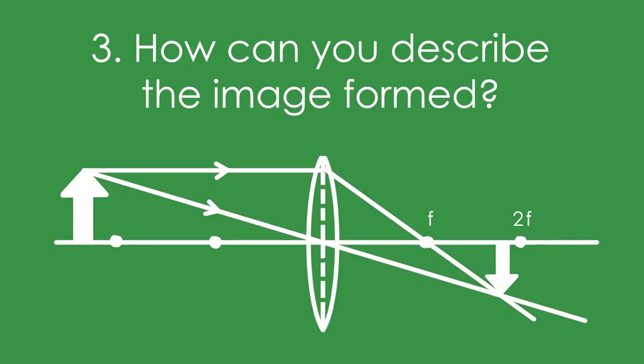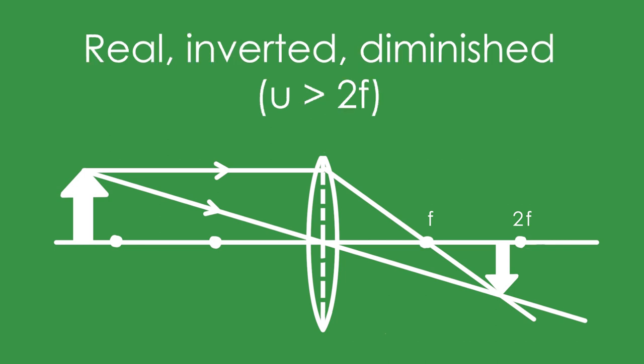How can you describe the image formed here? It's real because it's being projected. It's inverted, it's the other way up, and it's diminished, it's smaller. The object is more than 2F away from the lens.